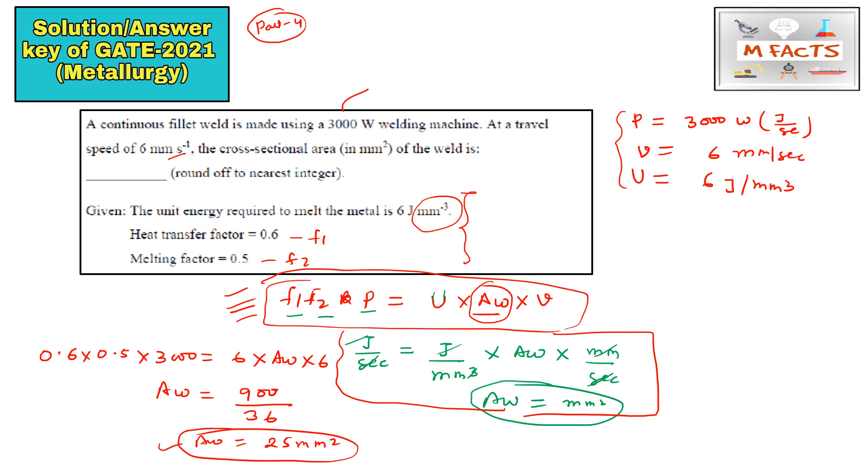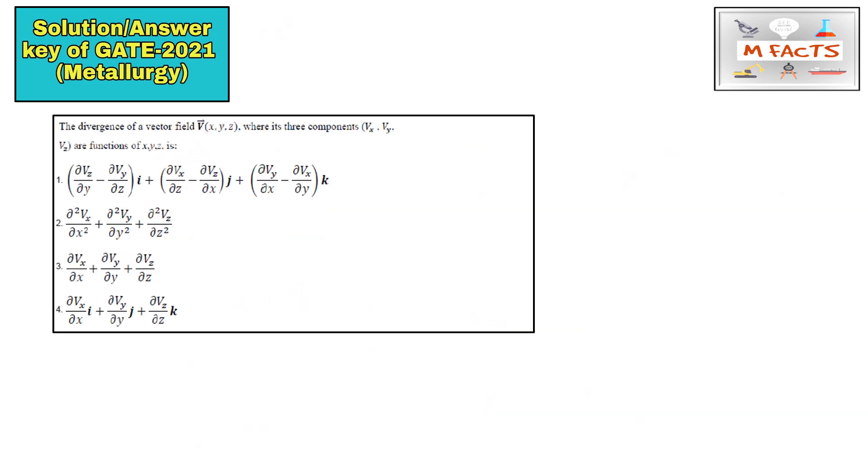The correct answer is 25 mm square. This question is from mathematics. The divergence of the vector field, so they are asking for the divergence of that vector field v(x,y,z) where its three components vx, vy, vz are function of x, y, z. They are asking for the divergence value.